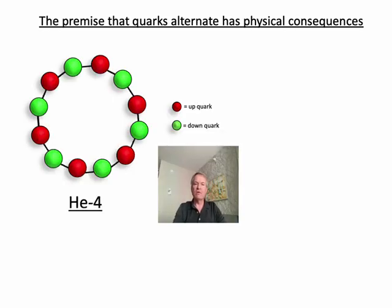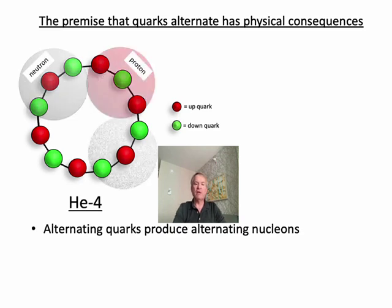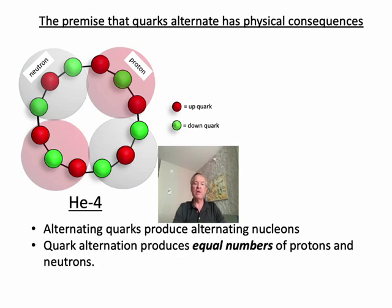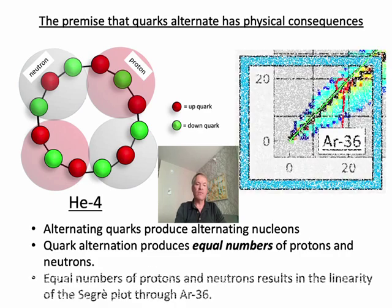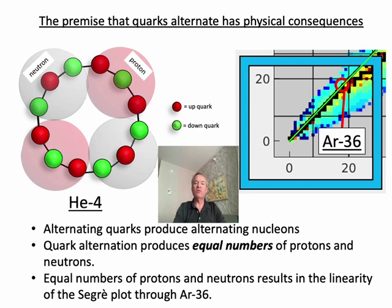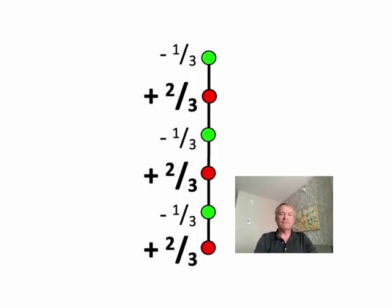The premise that quarks alternate has physical consequences. First, alternating quarks lead to alternating nucleons. And secondly, alternating quarks produce equal numbers of protons and neutrons. These equal numbers of protons and neutrons explain the linearity of the Sager plot through argon-36. And if quarks alternate, quark charge must also alternate. Here we see the up quark is plus two-thirds and the down quark minus one-third.